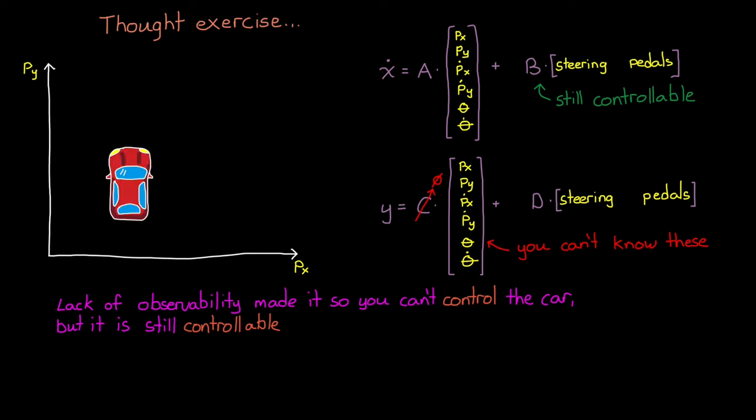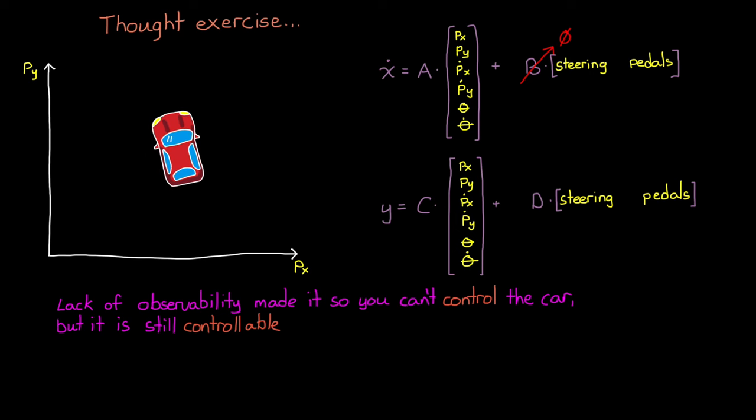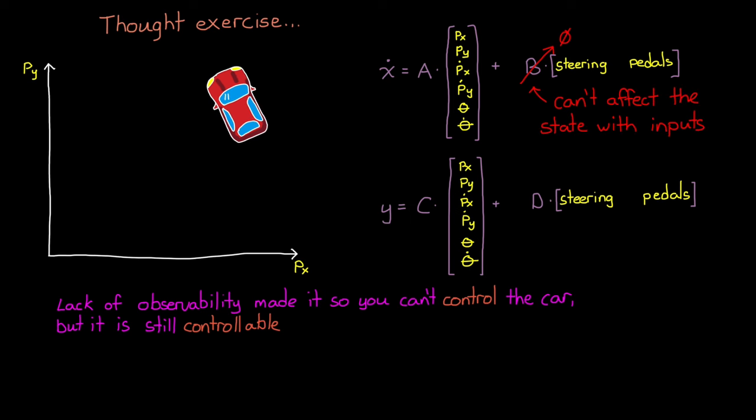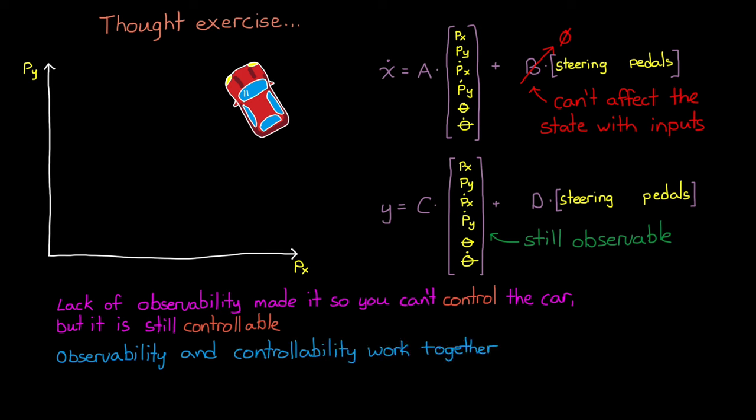Now, let's imagine the opposite situation. We remove the steering wheel and the pedals, which has the effect of zeroing out the B matrix. You can imagine how this could happen if you hit a large icy patch and the car skids along with no effect from steering or braking. Even though you can't affect the state of the car, this system is still observable since you can watch the speedometer and you can track your position by looking outside. So you can see how it's necessary to have a system that is capable of being observed and controlled. They work together.